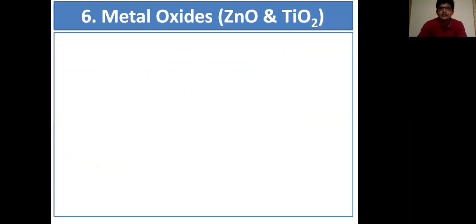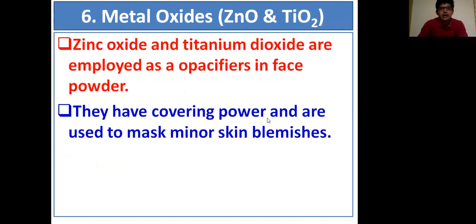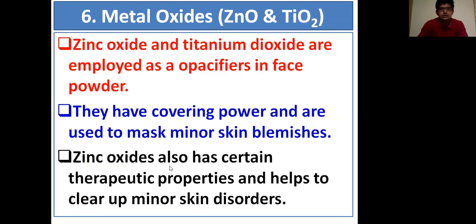The sixth constituent is metal oxides, specifically zinc oxide and titanium dioxide. They are employed as opacifiers in face powder, providing covering power and masking minor skin blemishes. Zinc oxide also has certain therapeutic properties — its well-known antibacterial function helps to clear up minor skin disorders.